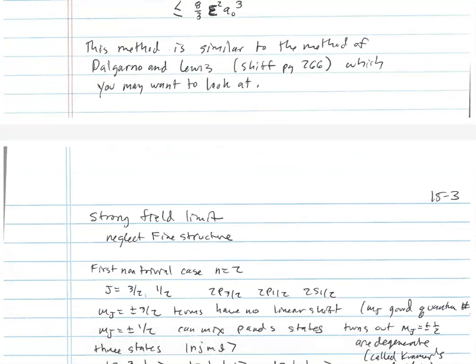This method is similar to the method of Dalgarno and Lewis. If you're interested in that method, look in Schiff's textbook on page 266. It's an interesting way of doing second-order perturbation theory summations in cases where you can find special operators with particular commutation relations with the Hamiltonian.